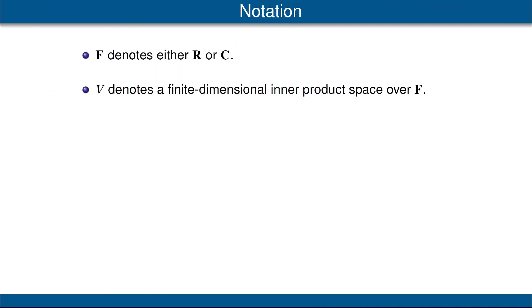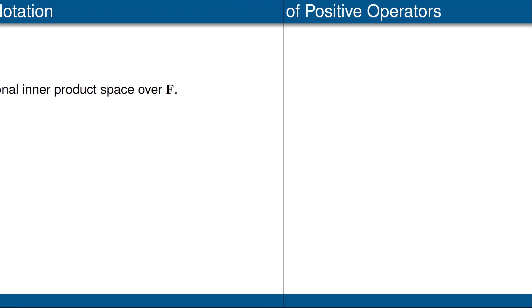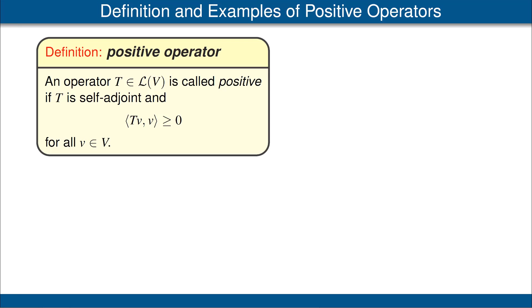Let's review the standard notation that we need for this video. F denotes either the scalar field R of real numbers or the scalar field C of complex numbers. V denotes a finite-dimensional inner product space over F. Recall that the term operator means a linear map from a vector space to itself, and we denote the set of all operators on V by L(V).